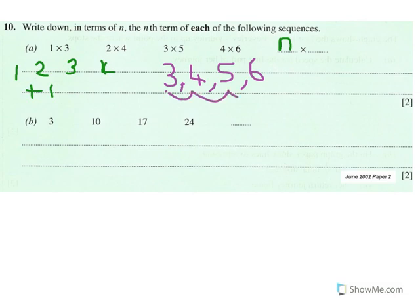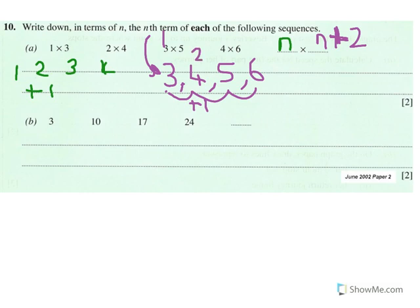This also goes up by adding one. So it's got to be n something — just n. But that's not going to be enough, because one multiplied by one is not three. So we're going to have to add something. The simple answer is just add two. One plus two gets us the answer. So the rule is n plus two for the second part. Check: two plus two is four, three plus two is five, four plus two is six.